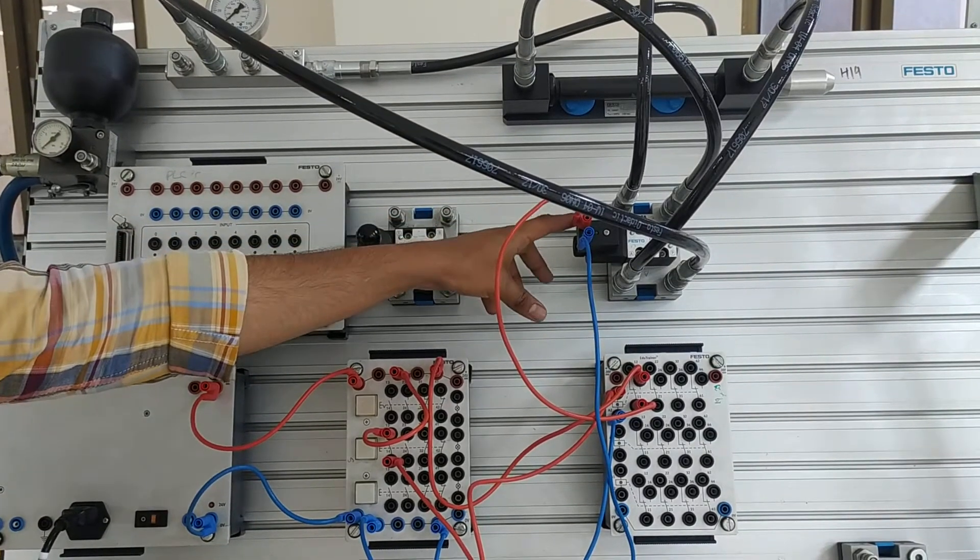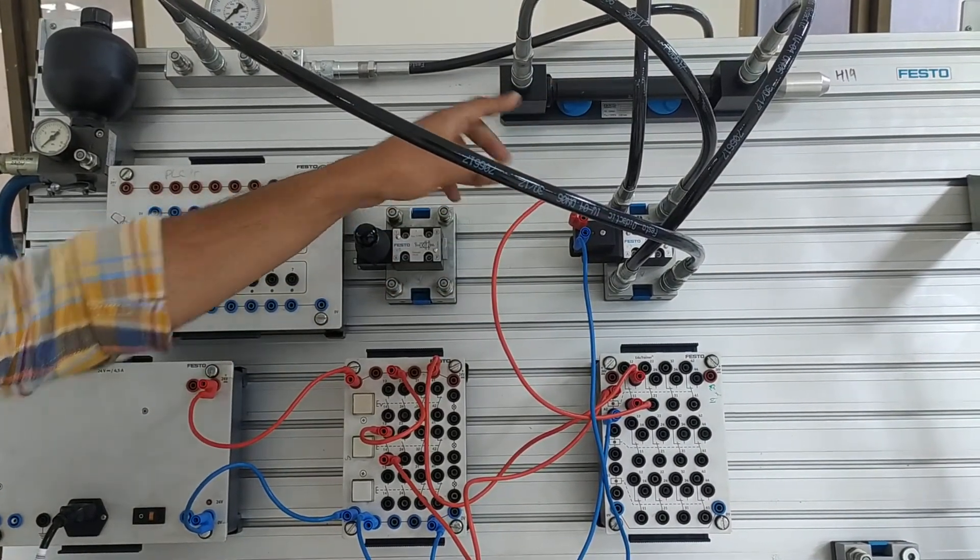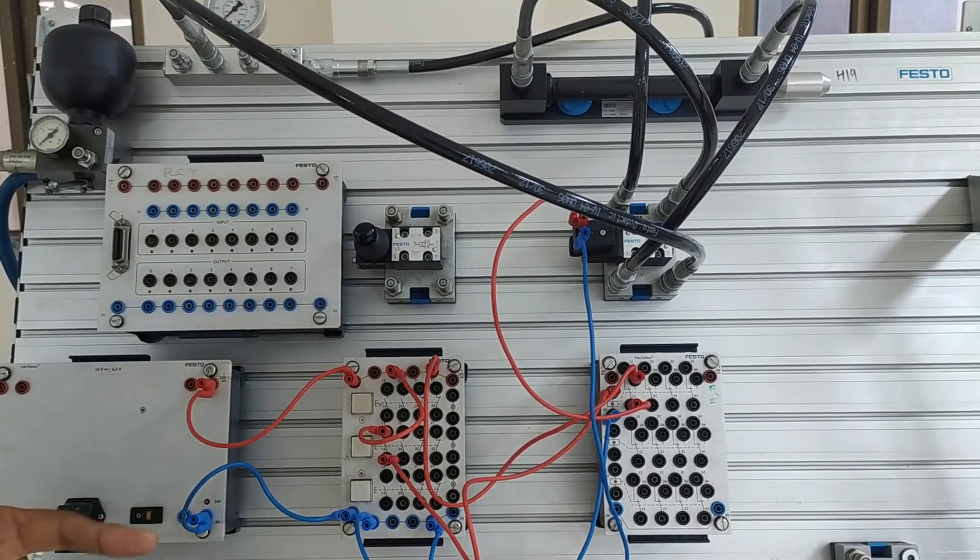This is the solenoid valve. It is used to control the direction of the cylinder. The whole system is working on 24V power supply.